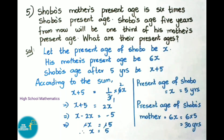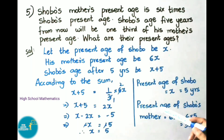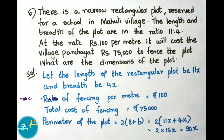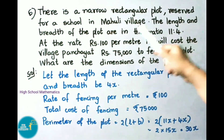The negatives on both sides cancel, so x = 5. Present age of Shobo is x = 5 years. Present age of Shobo's mother is 6x = 6 × 5 = 30 years. Therefore Shobo's present age is 5 years and his mother's age is 30 years. Now question number 6: There is a narrow rectangular plot reserved for a school in Makuli village.